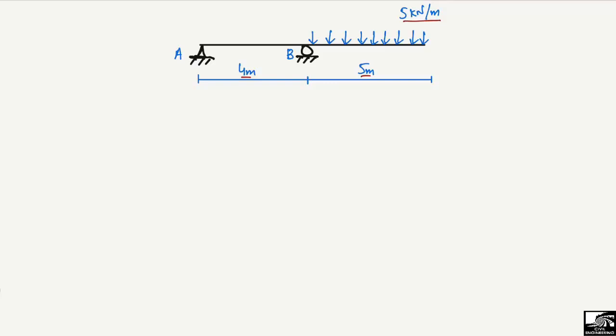Now, how to analyze this beam and draw the shear force and bending moment diagram? First we will start with the support reactions. It is a hinge support, so it can take vertical reaction, and it is a roller support so it can also take vertical reaction. There is no horizontal load, so the horizontal component of the hinge support will be equal to zero. The roller support cannot take horizontal load either, so there is no horizontal reaction from B.